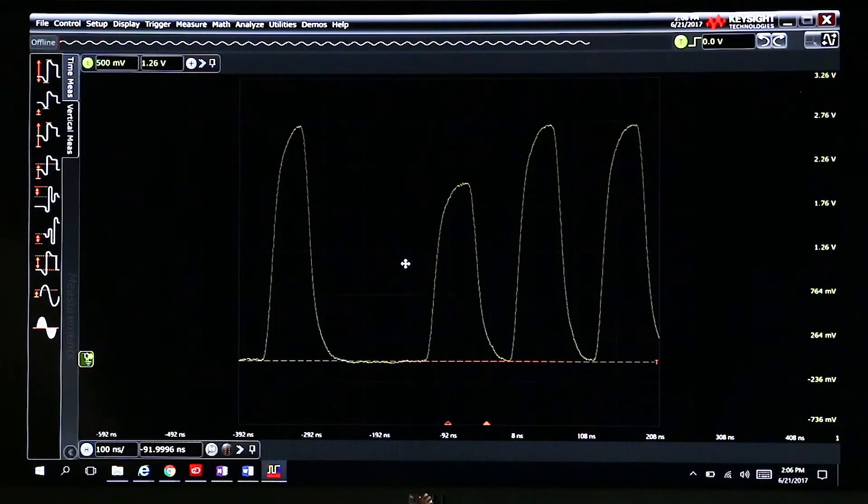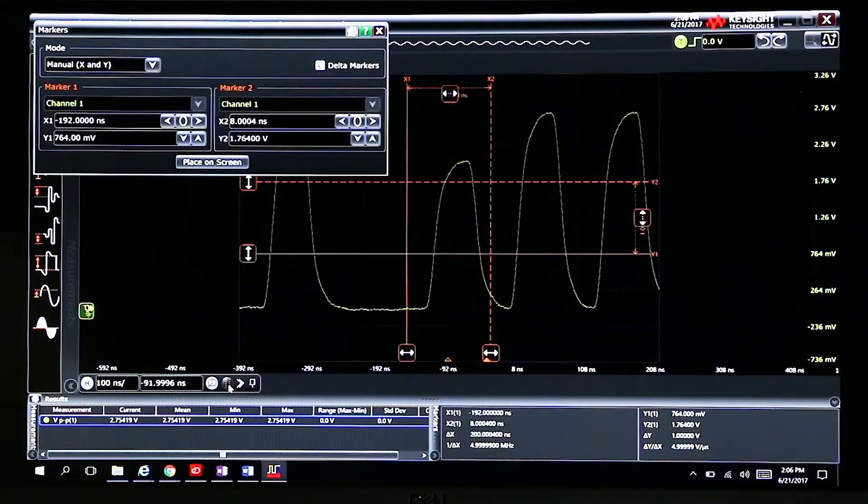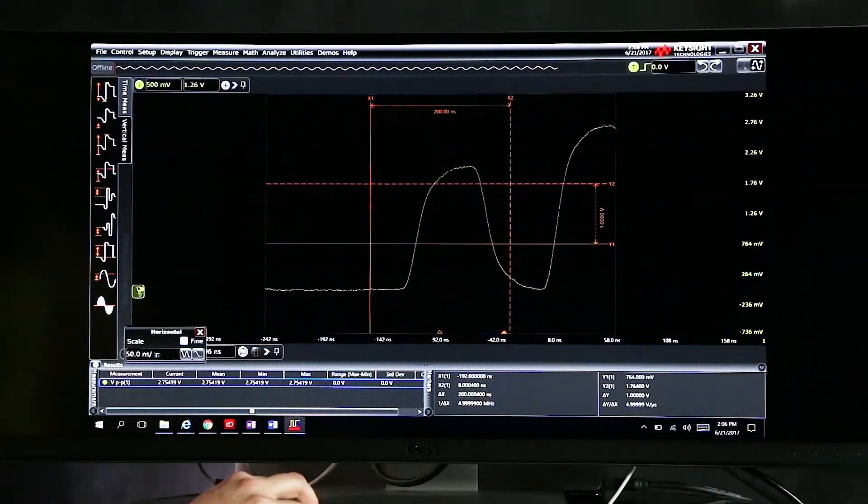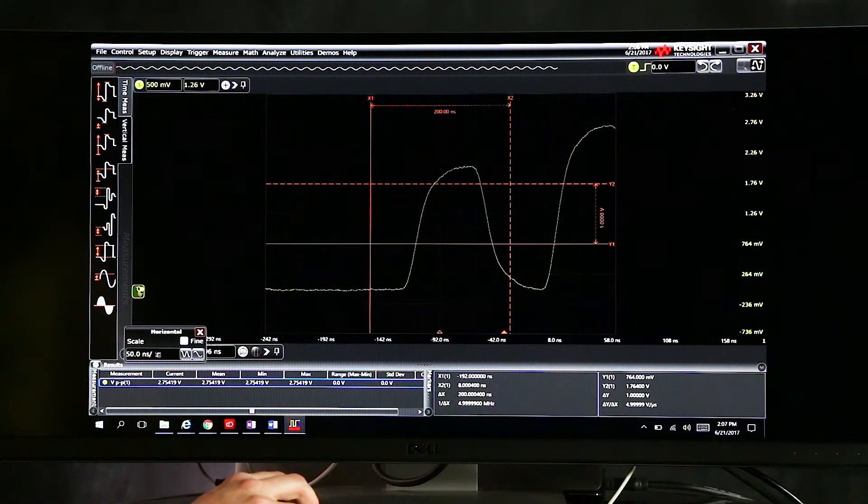Now I can do all the things that I was doing on my oscilloscope. I can make drag and drop measurements, I can turn on markers, and I can even change time base by using the scroll wheel of my mouse to zoom in and out. I have all the capabilities of the oscilloscope available on my desktop.